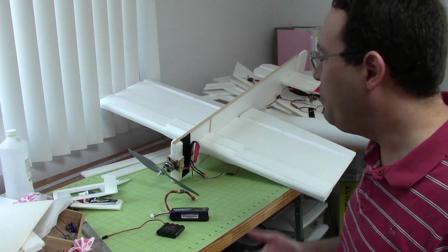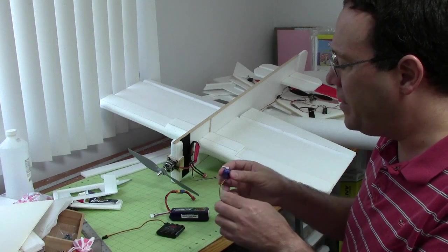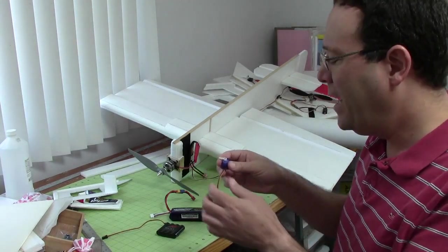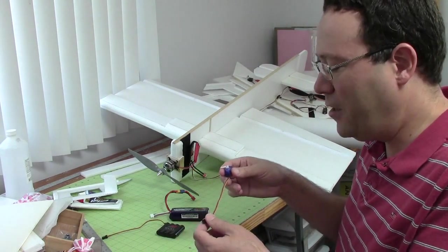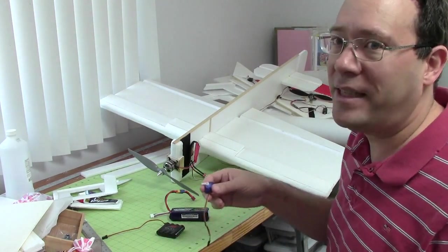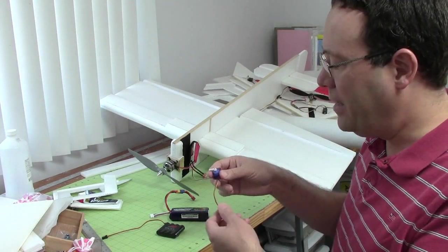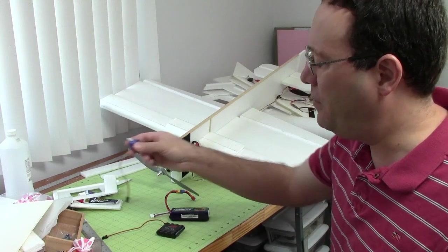Now of course, you may want to weigh it yourself because I know a lot of the time, for example, in a servo, they'll give you a weight, but they leave out the weight of the wire, which doesn't make any sense to me, especially if it comes with that wire. So the actual weight could be a bit higher than you think because the wire can be, for a tiny servo, the wire can be a lot of the weight.